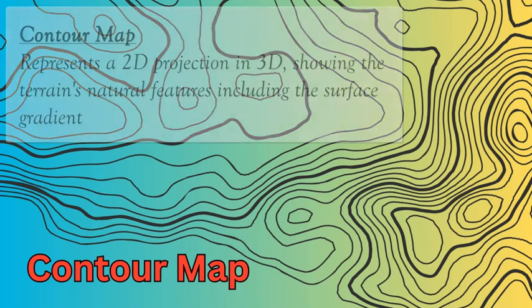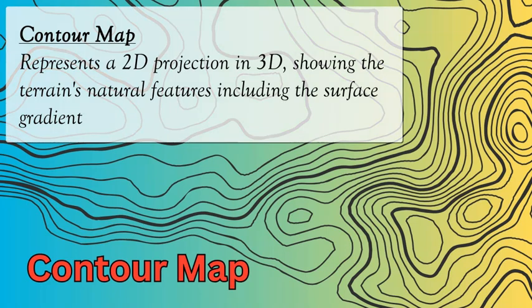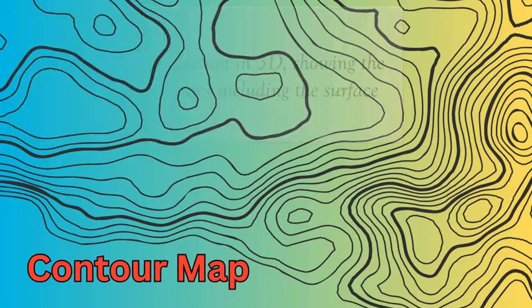It takes the physical landscape in three dimensions in real life and transforms it into a two-dimensional projection using contour lines to accurately show the elevation changes across a landscape, including valleys, rivers, hills, mountains, waterfalls, and cliffs. All these features can be accurately shown on a contour map.